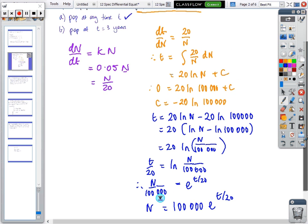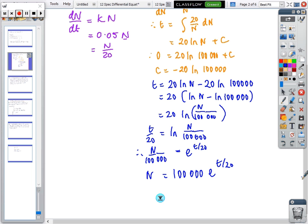The second part of the question is what's the population in 3 years? So n equals 100,000 e^(3/20), and when you put that in the calculator you get about 116,183 people.